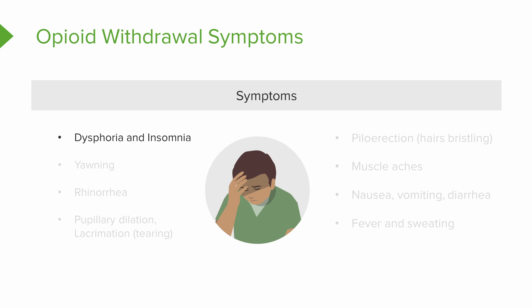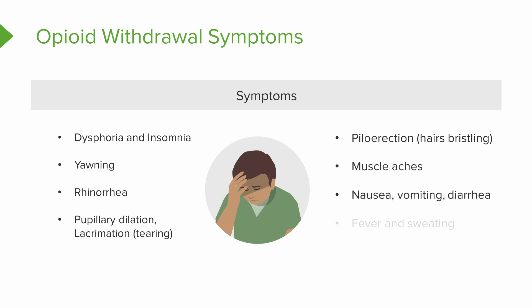Instead of euphoria, they have dysphoria and feel terrible. They have yawning, a runny nose — that's rhinorrhea. Their pupils will dilate and they'll be tearing — a kind of parasympathetic response. Their hairs stand on end, their muscles hurt, they have nausea, vomiting, and diarrhea — their gut is going crazy — and they have a fever and sweating. Think of it as an overall horrible case of the flu. Watch them very closely for severe dehydration because of the nausea, vomiting, diarrhea, fever, and sweating.